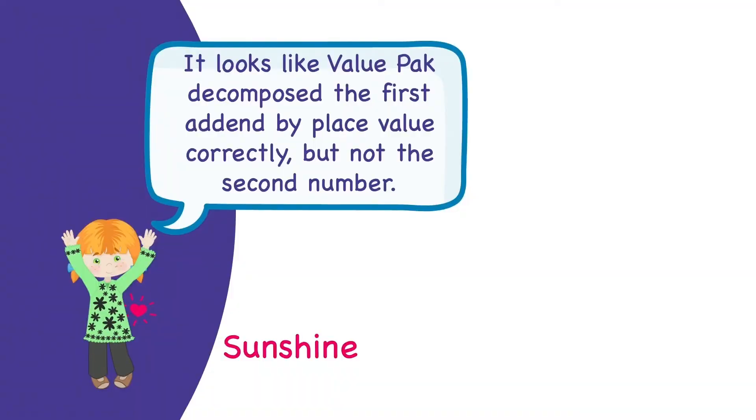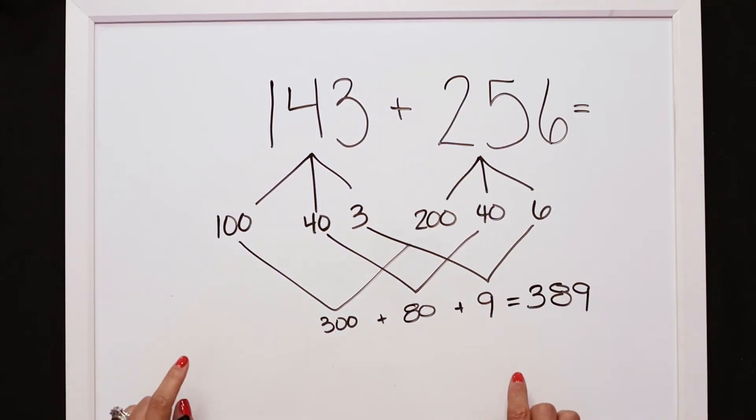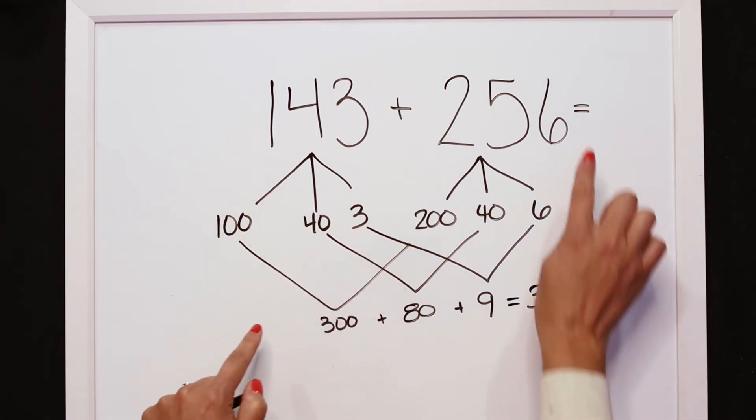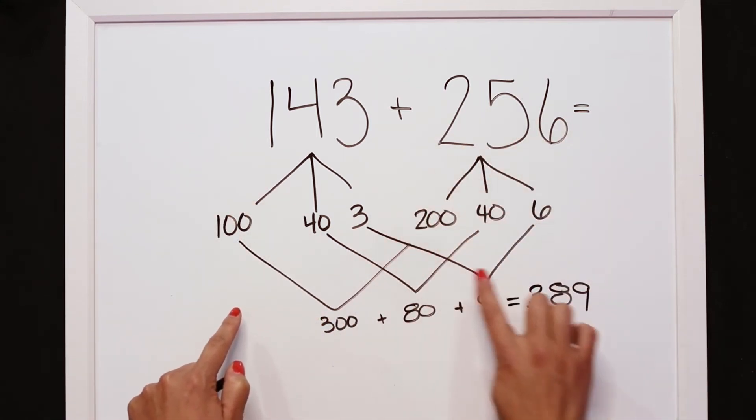Sunshine said, it looks like ValuePack decomposed the first addend by place value correctly, but not the second number. When I looked closer at this, I can see what Sunshine is saying. It does look like ValuePack was able to break down that first number correctly, but it looks like there might be something wrong on our second addend. Let's see what our friend Mira thinks.